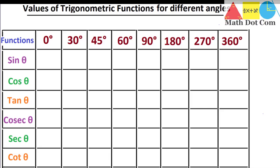Hello everyone. Today I am going to tell you the trick to memorize the values of the trigonometric functions for the different angles. The angles are given in the columns and the trigonometric functions are given in the rows. The trigonometric functions are sine, cos, tan, cosecant, secant, and cot. And the angles are 0, 30, 45, 60, 90, 180, 270, and 360.